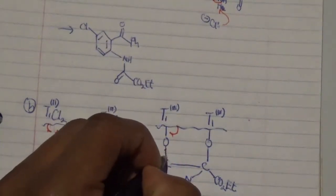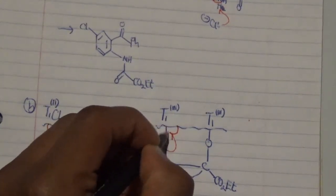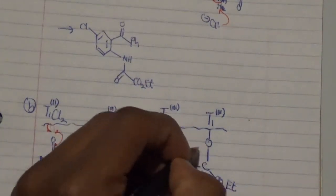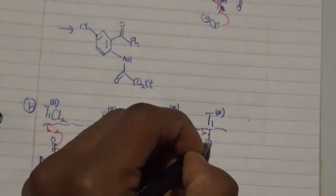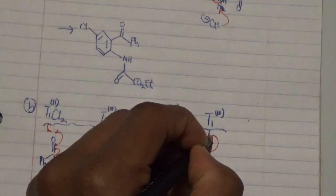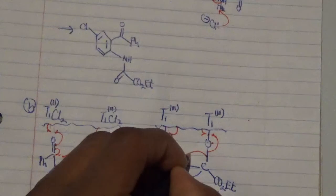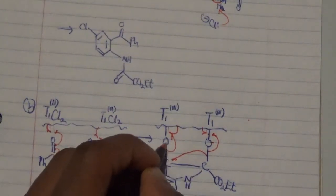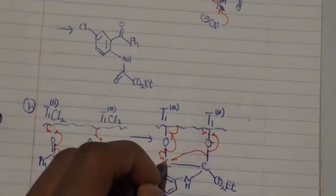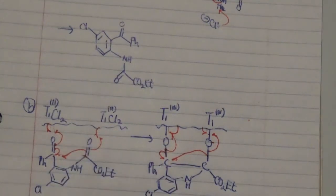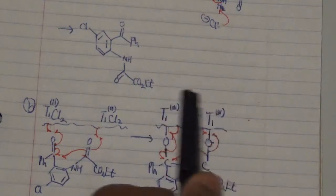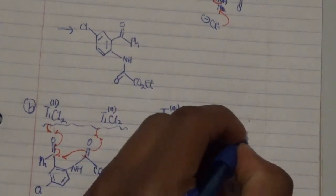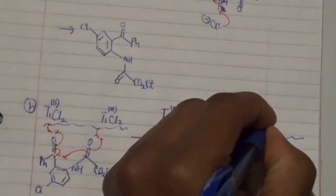Next, titanium donates another electron; the carbon-oxygen bond removes one electron and reforms a double bond, cleaving off the titanium-oxygen bond. The same happens on the other side — one electron reforms the double bond, and the remaining electron interacts with the adjacent electron to form a pi bond, thereby creating a carbon-carbon double bond. This results in a change in valence — titanium goes from +3 to +4.